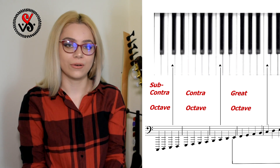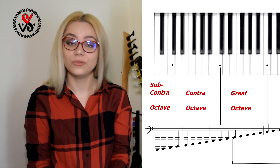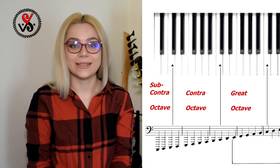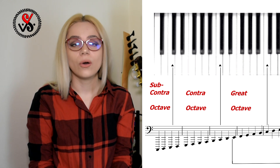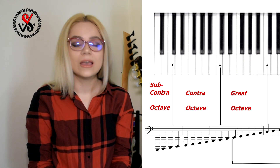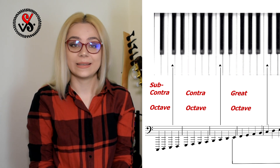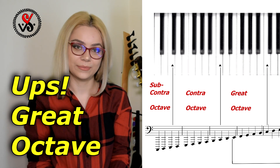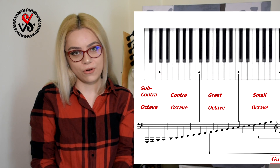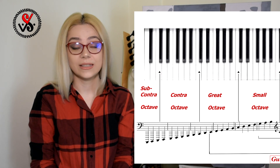In total there are 8 octaves. The first one is the sub-contour octave, and it's not a full one. The second one is the contour octave. The third one is the big octave. The fourth one is the small octave. And then octaves one, two, three, and four.